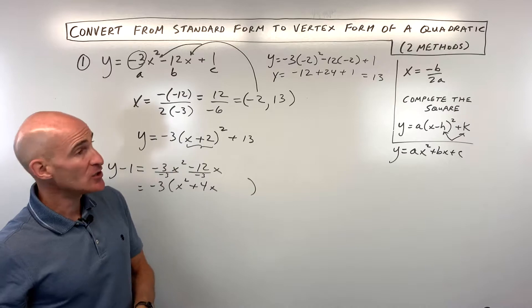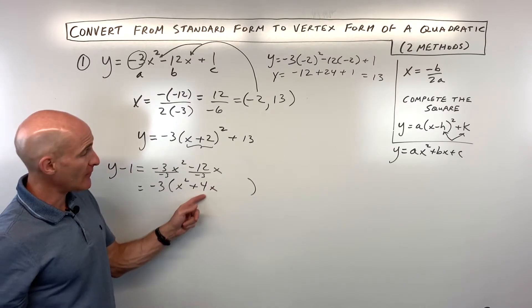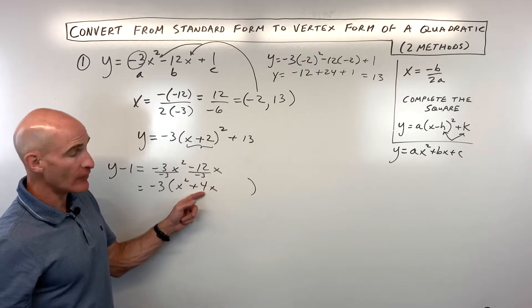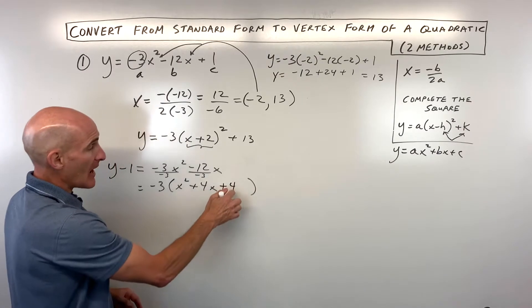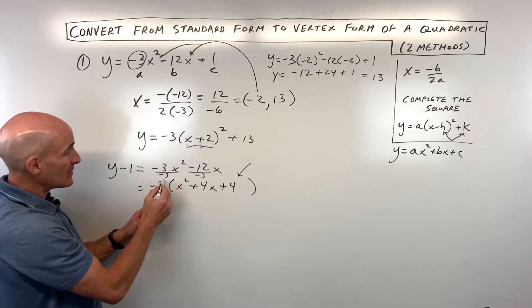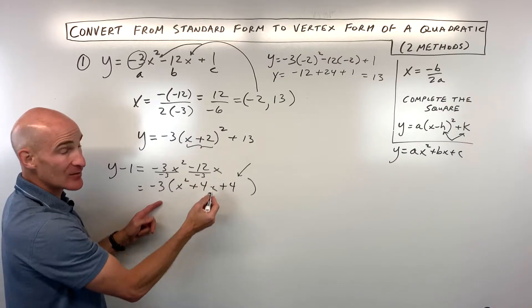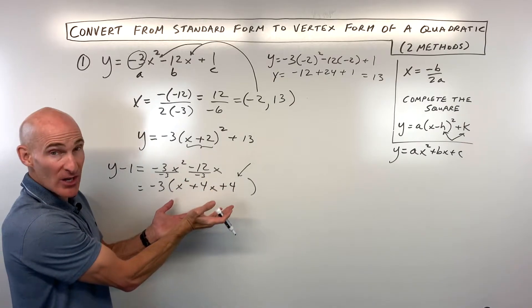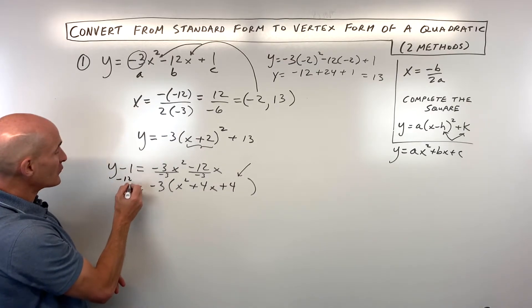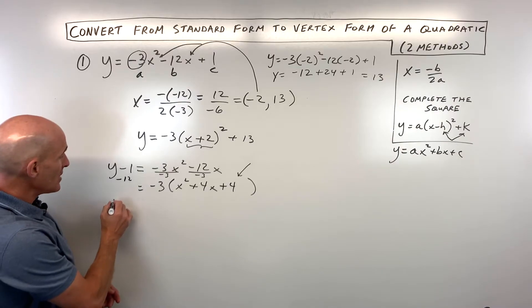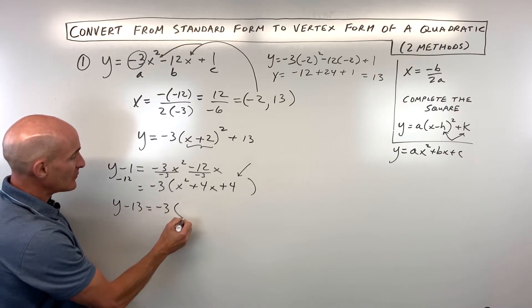To complete the square, take half of the b value and square it. Half of 4 is 2, and 2 squared is 4. We're adding 4 inside the parentheses, but it's actually negative 3 times 4, which is negative 12 being added to the right side. To counterbalance that, we add negative 12 to the other side to keep the equation balanced, giving us y minus 13 equals negative 3.